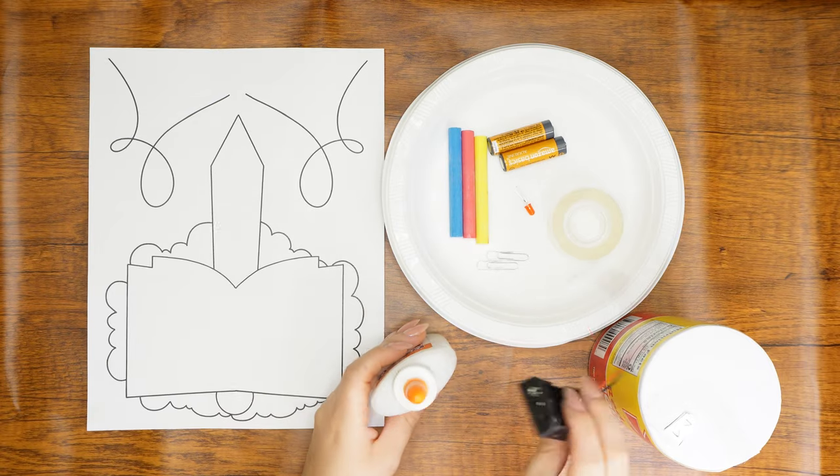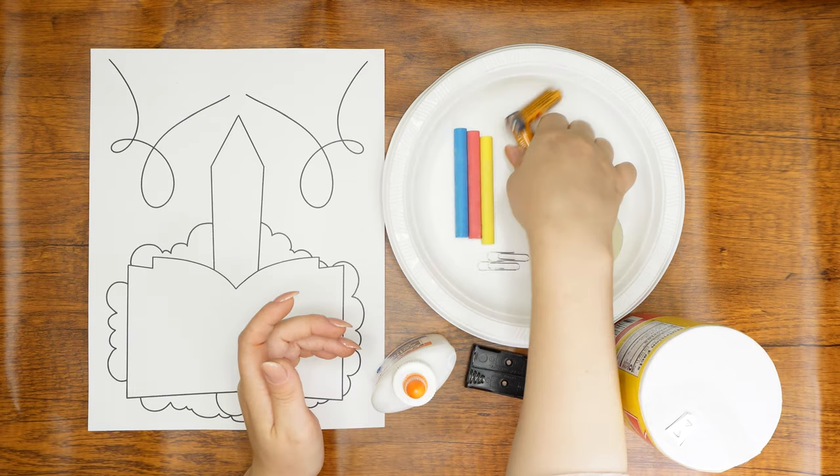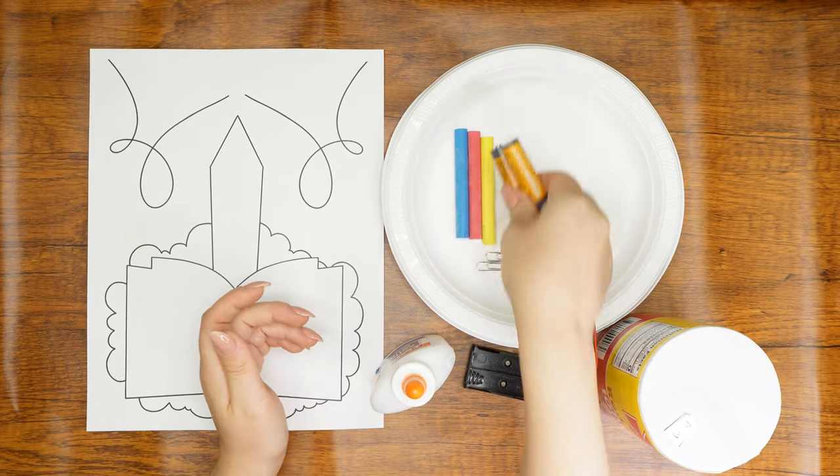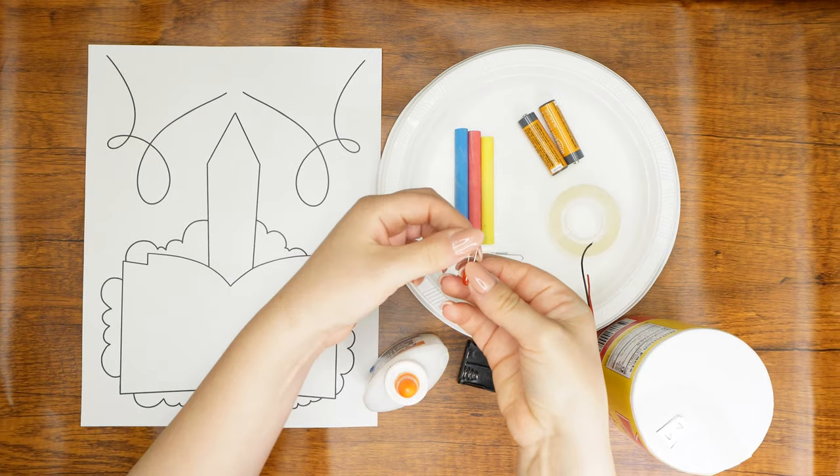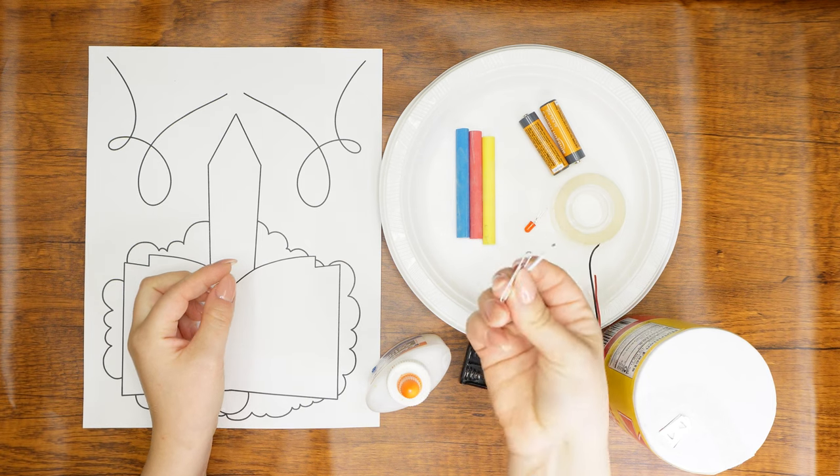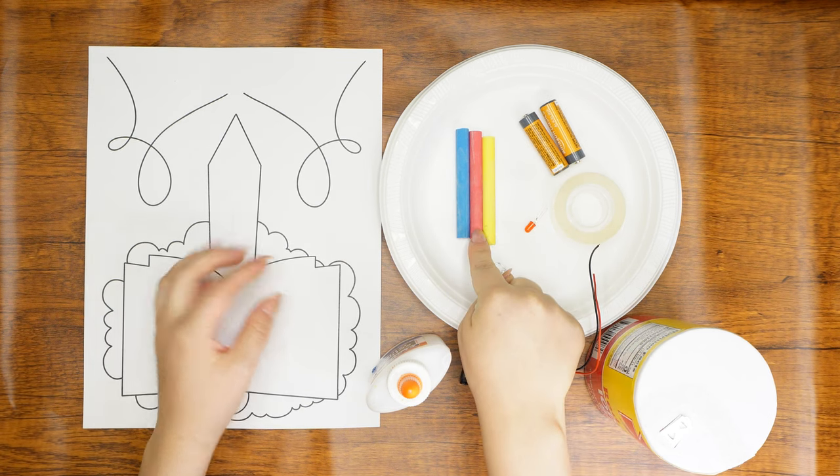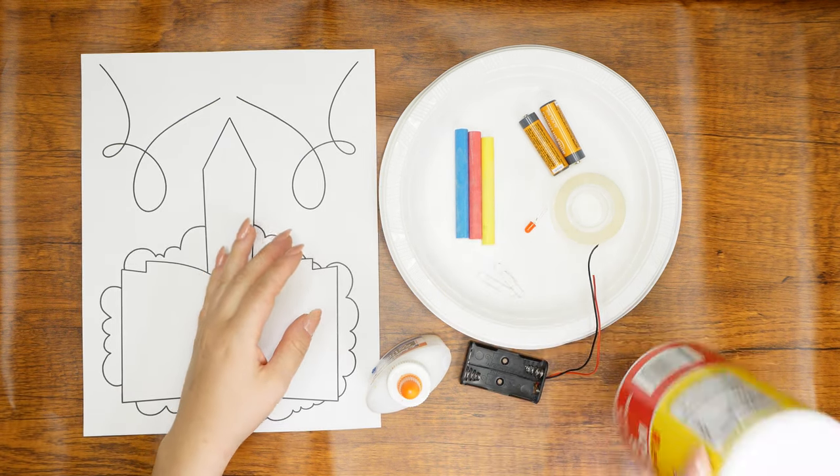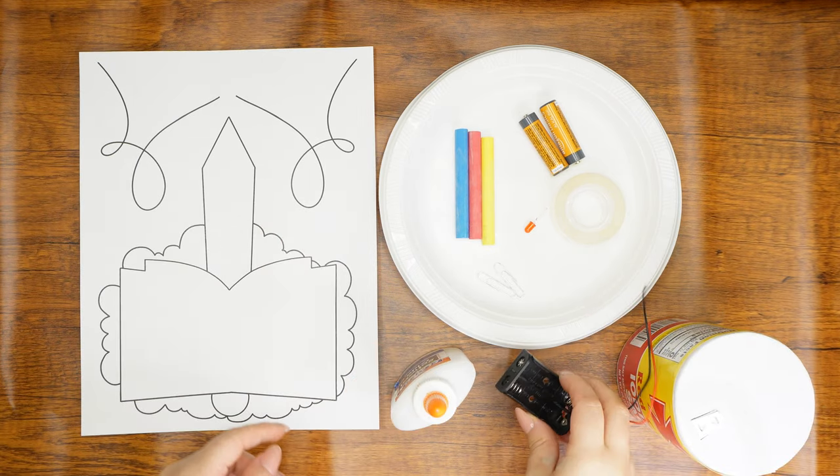We'll also need a battery pack, two AA batteries, an LED light, two paper clips, scotch tape, colorful chalk, salt, liquid glue, four plastic plates, and an X-Acto knife or razor.